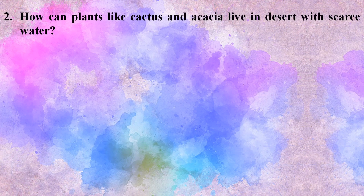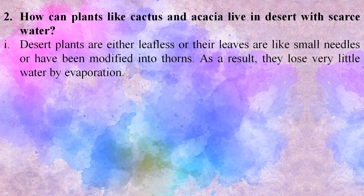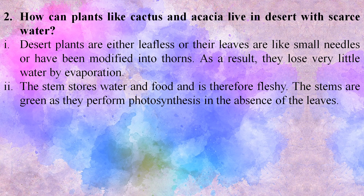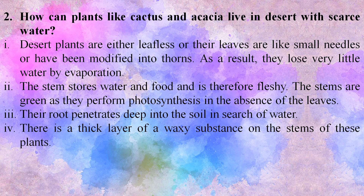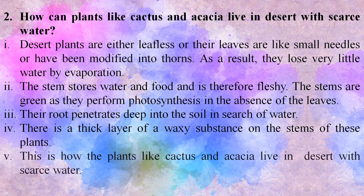Second, how can plants like cactus and acacia live in desert with scarce water? Desert plants are either leafless or their leaves are like small needles or have been modified into thorns. As a result, they lose very little water by evaporation. The stem stores water and food and is therefore fleshy. The stems are green as they perform photosynthesis in the absence of leaves. Their roots penetrate deep into the soil in search of water. There is a thick layer of a waxy substance on the stems of these plants. This is how plants like cactus and acacia live in desert with scarce water.